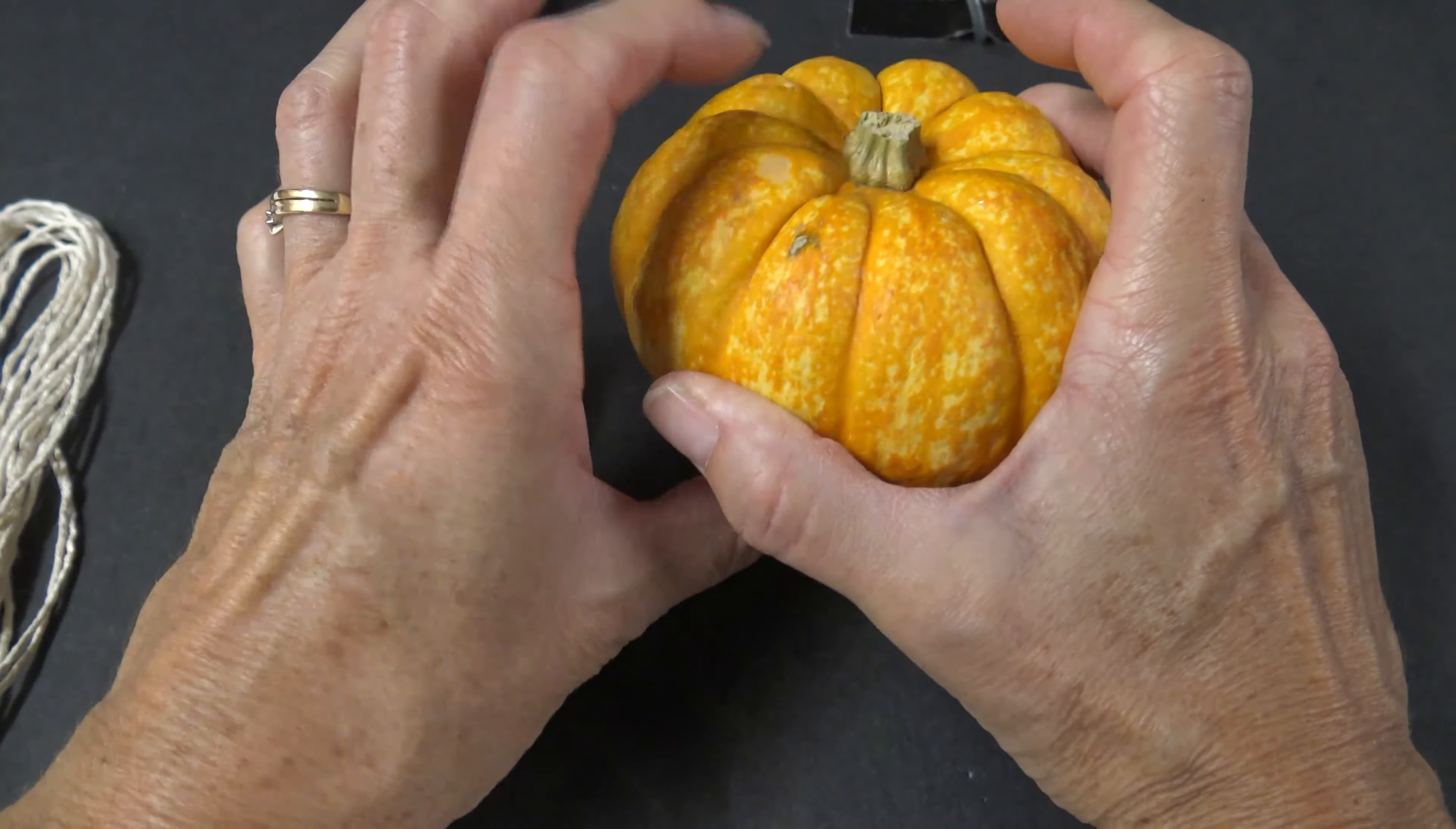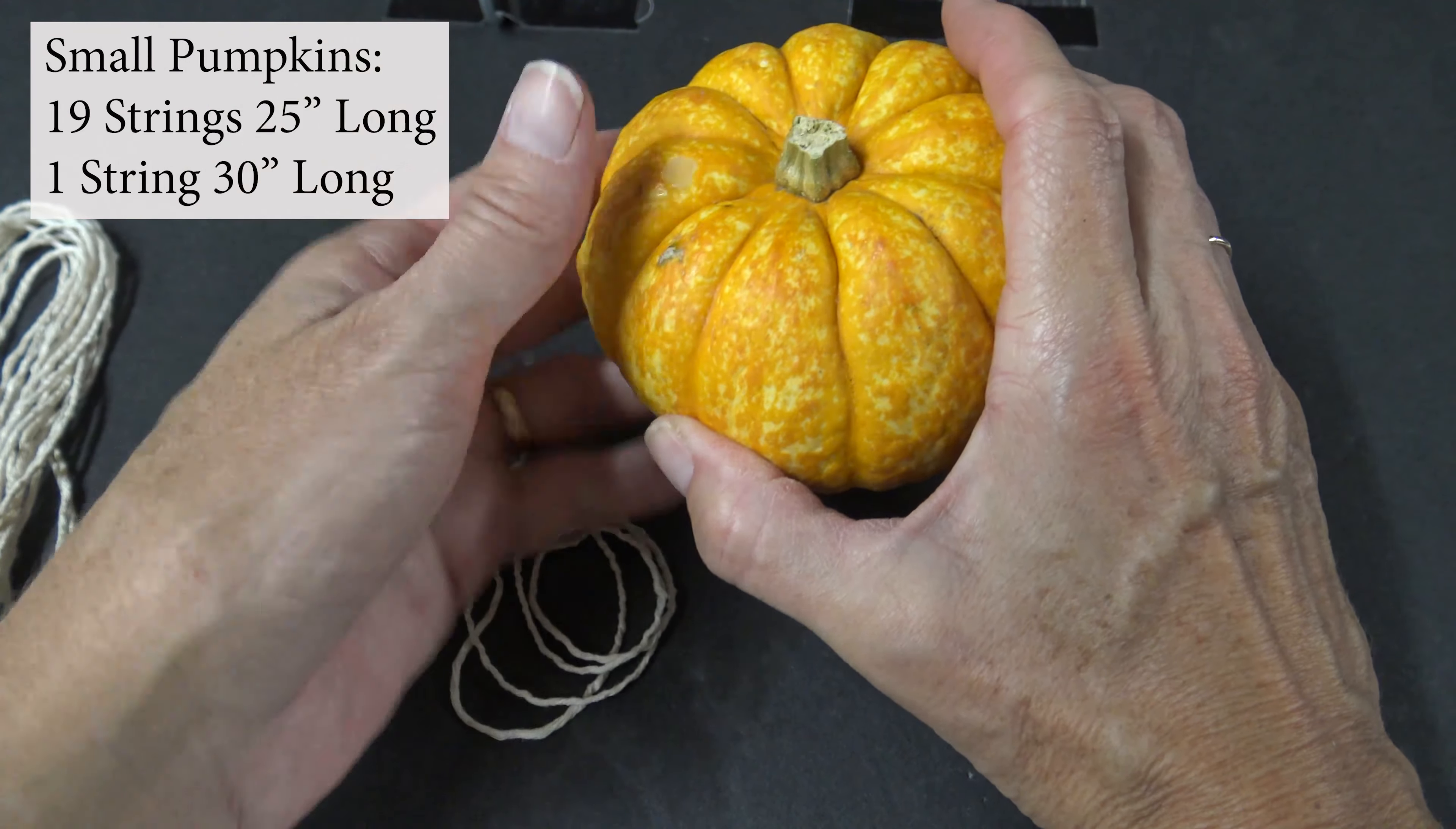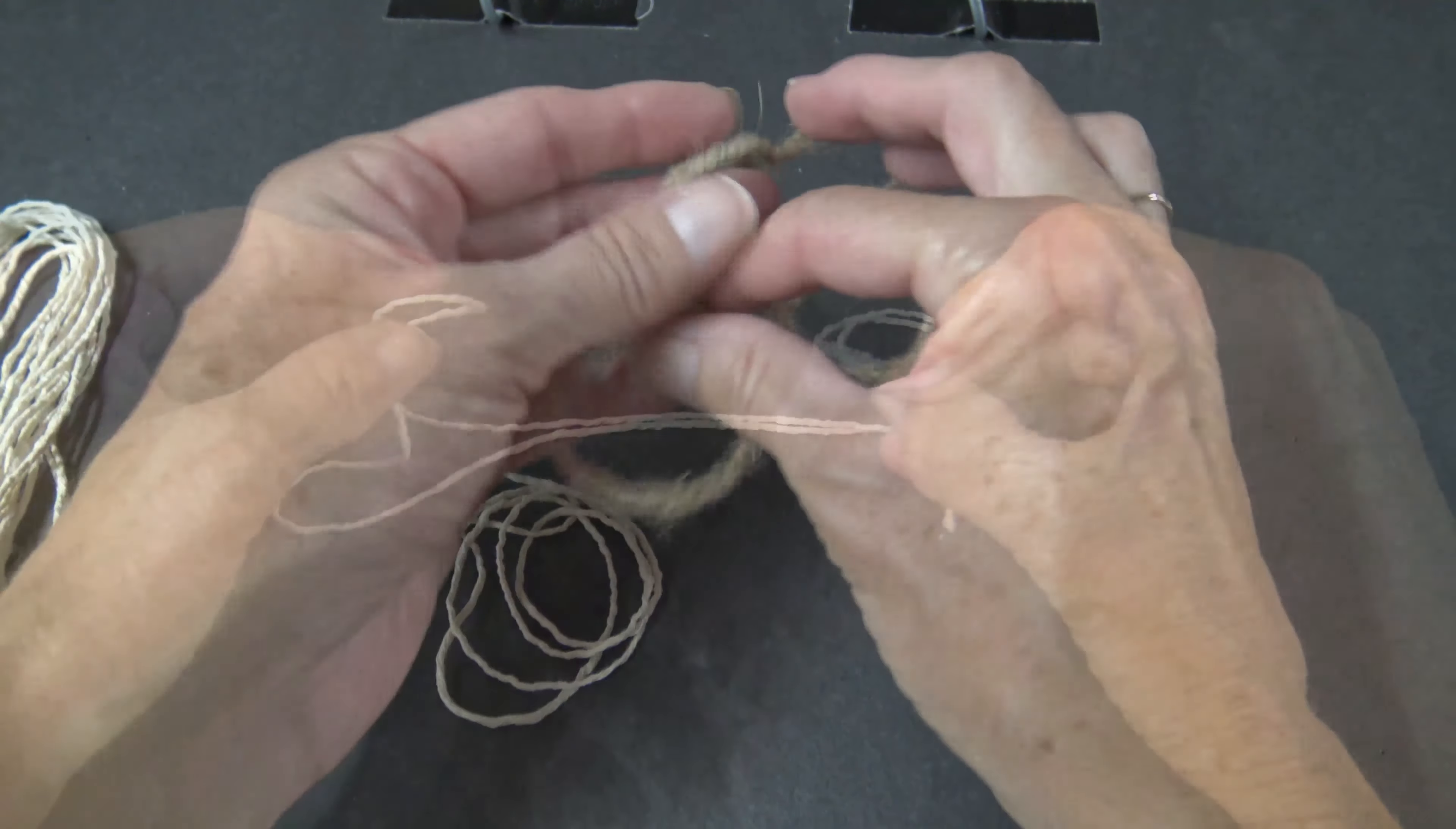I've done a handful of pumpkins, all of them roughly around five inches, so if you're doing a small one, cutting 19 at 25 inches and one at 30 inches should be good. Then for your stem, I'm going to use a thicker jute on this one. Cut a piece that's roughly 20 to 25 inches long for that.